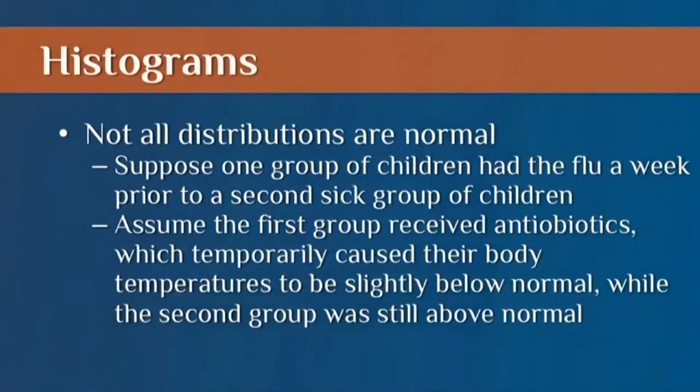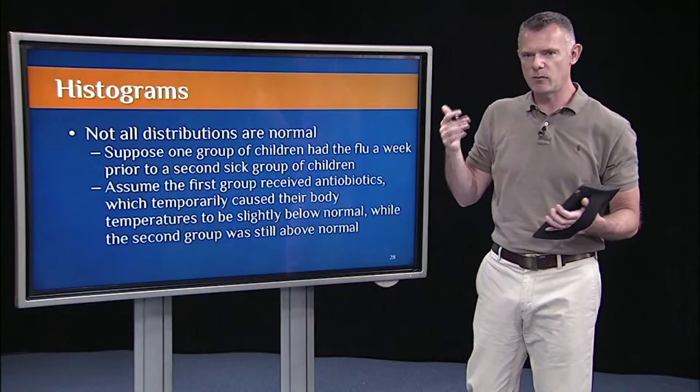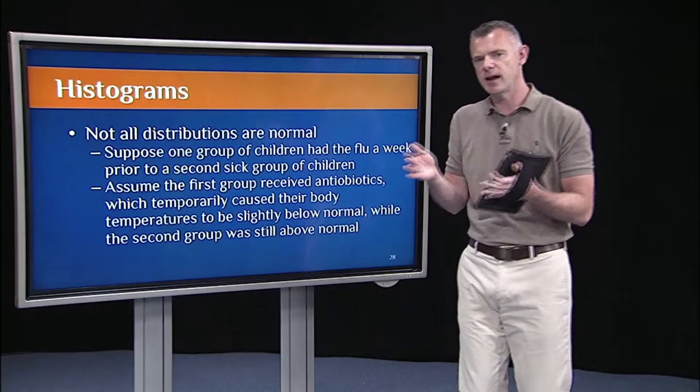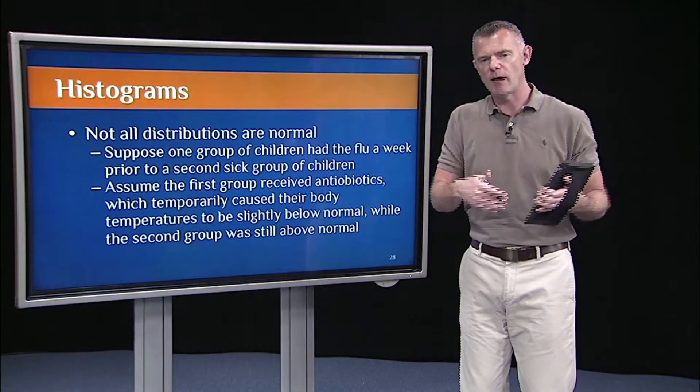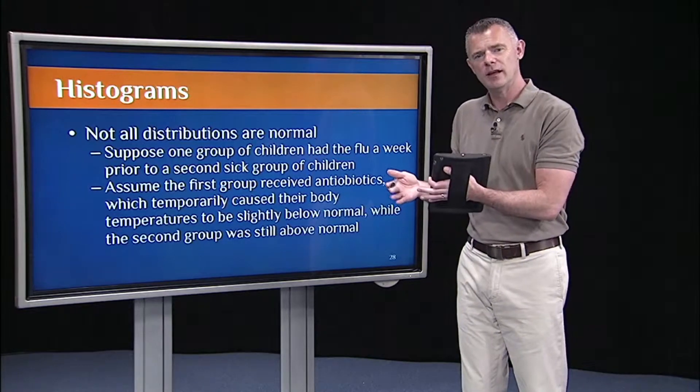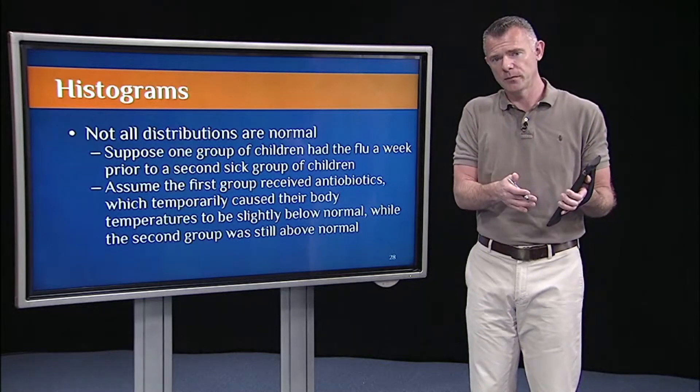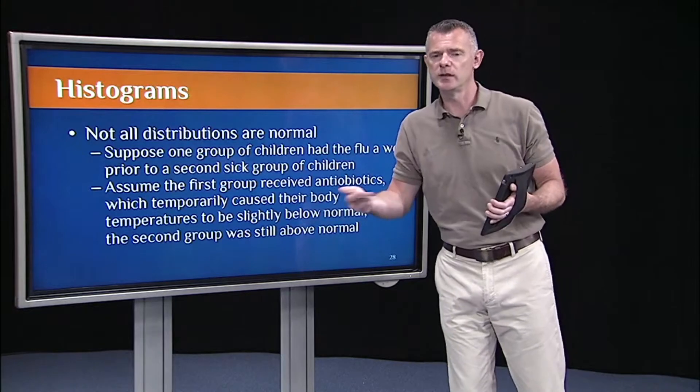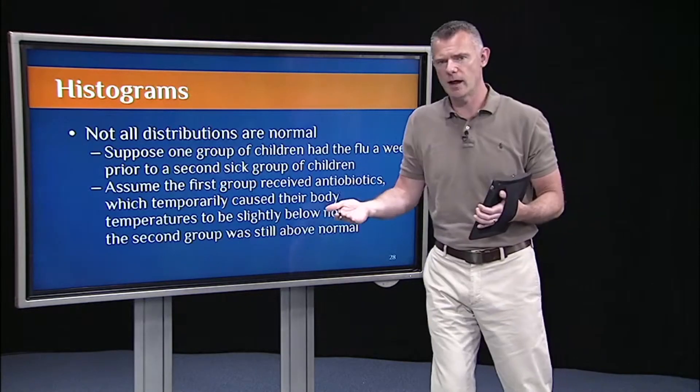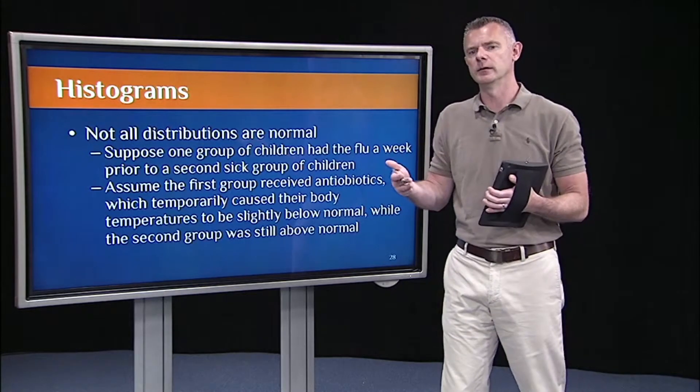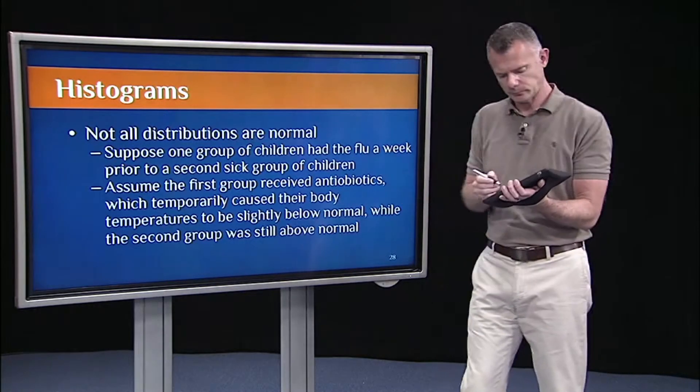Say we have one group of children. The entire group had the flu. Say a whole classroom full of children got sick with the flu. And then they were treated. They were given antibiotics. And one thing that can happen with antibiotics is it can actually suppress your body temperature a bit. So after getting the antibiotics, that group of children, their body temperatures might be a little bit below average relative to normal. And then let's compare them to a second group, a second classroom of kids who also got infected with the flu, but maybe say a week later. So their body temperatures are still high.